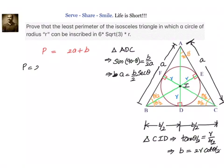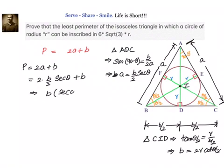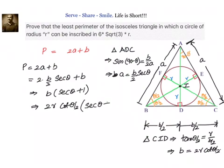So the perimeter P = 2a + B = 2·(B/2)·sec θ + B = B·(sec θ + 1). Since B = 2R·cot(θ/2), we can write P = 2R·cot(θ/2)·(sec θ + 1).